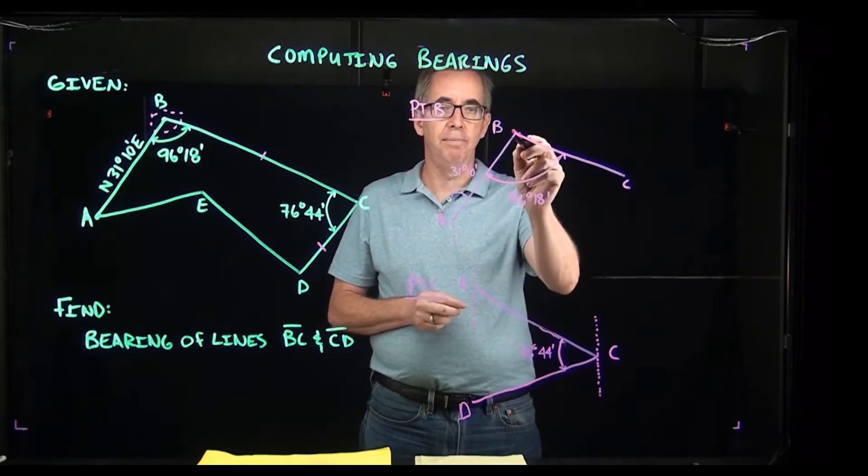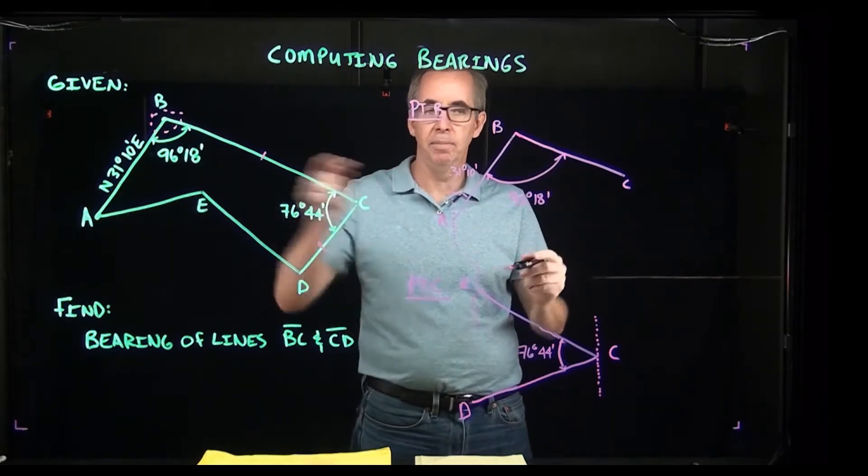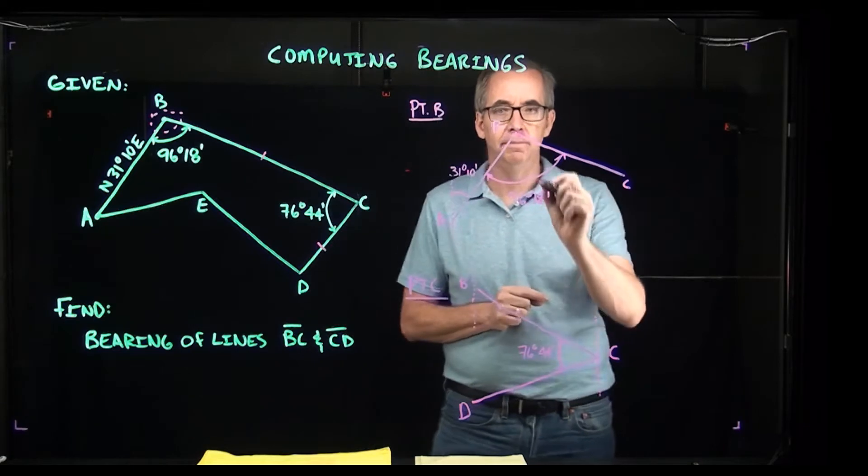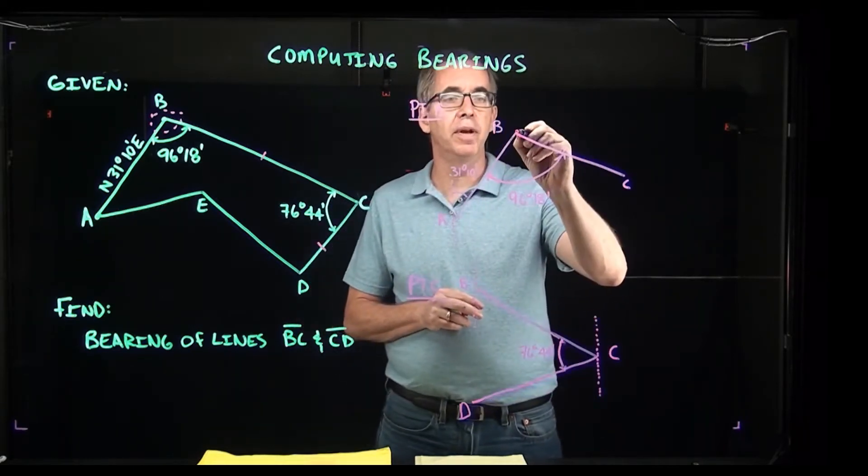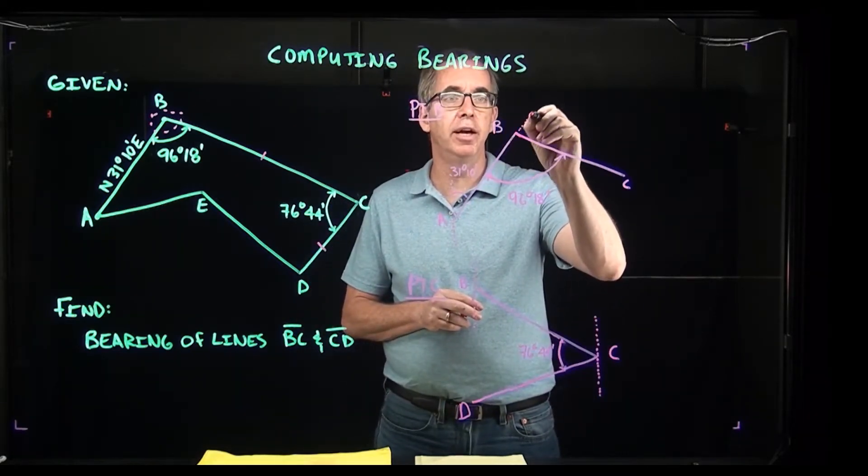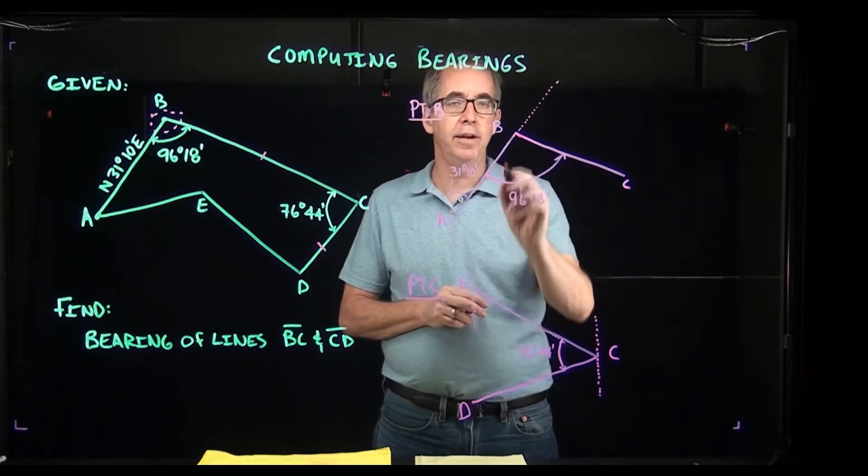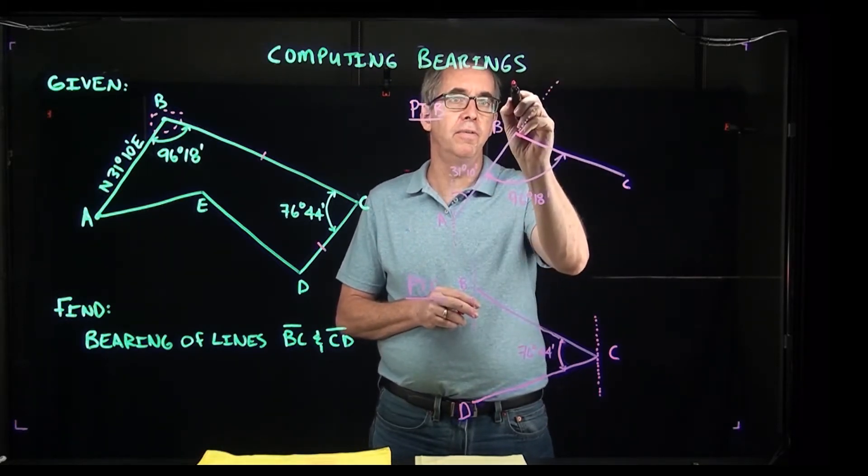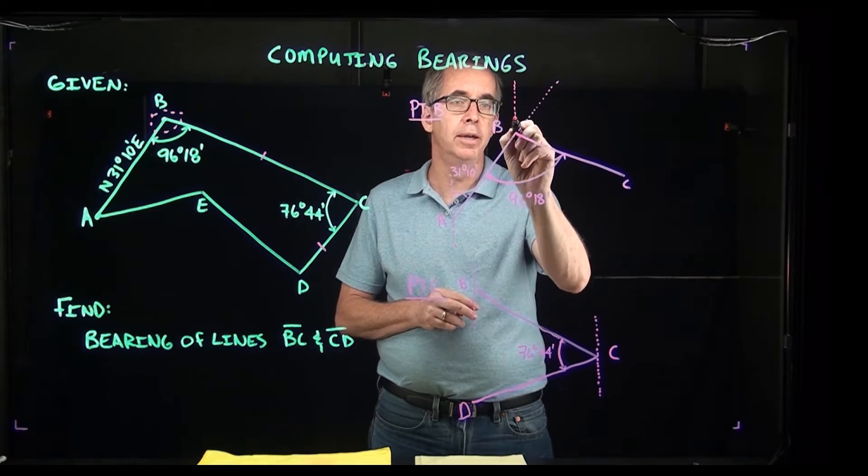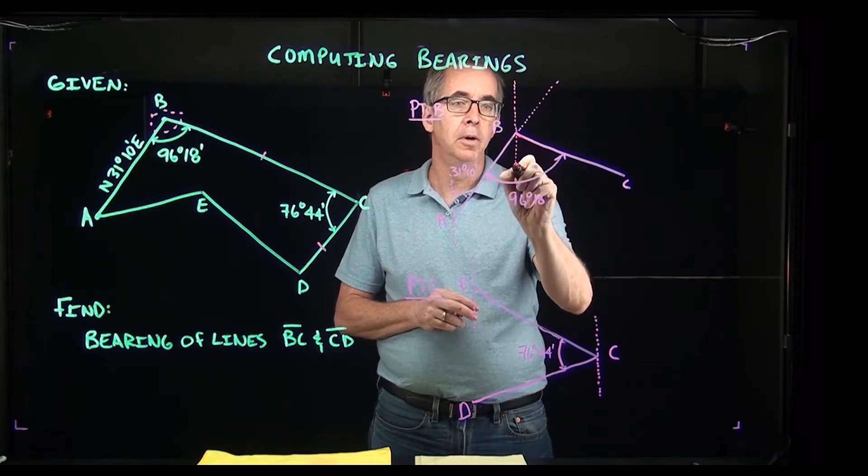Then I have point B here. I drew in the internal angle that was given to me as 96 degrees 18 minutes, and then I'm going to do a couple other things. First of all, I'm going to draw an extension line here as a hidden line, and I'm going to also draw another vertical reference or meridian right here.